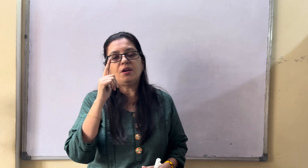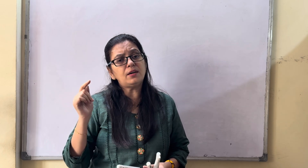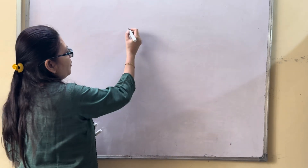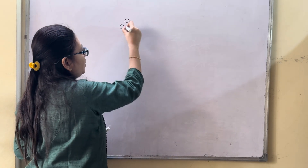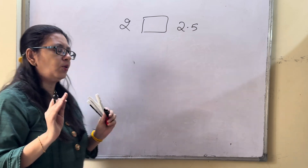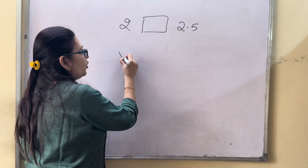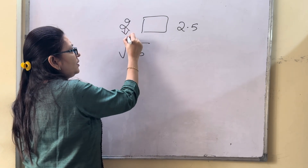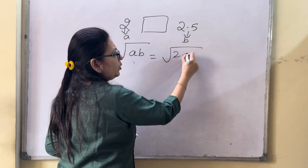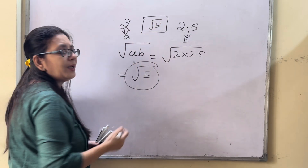In the previous video we found rational numbers between two given rational numbers. In the same way, if we want to find an irrational number between two numbers, say between 2 and 2.5, the formula is root of AB, where A and B are the two numbers. So this becomes root of 2 times 2.5, which is root 5 — that is your irrational number between these two.